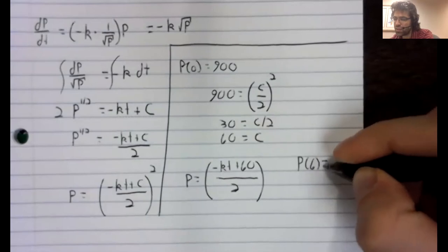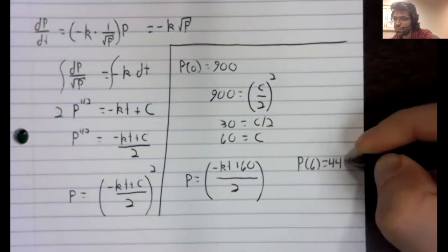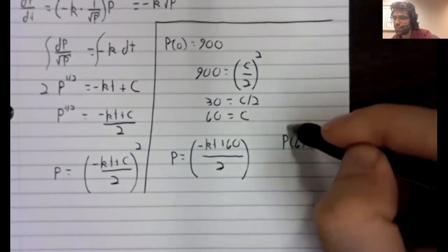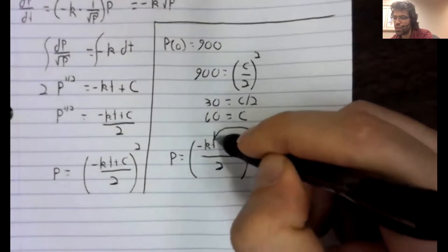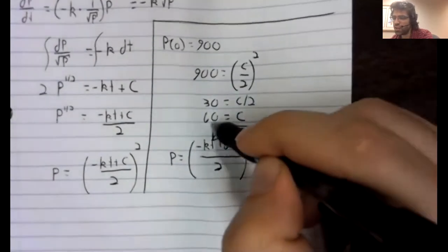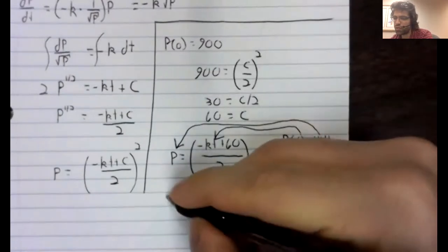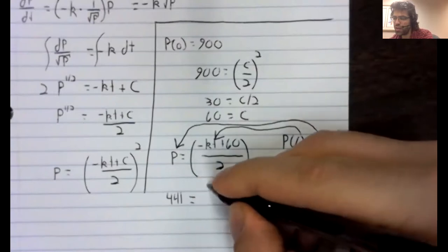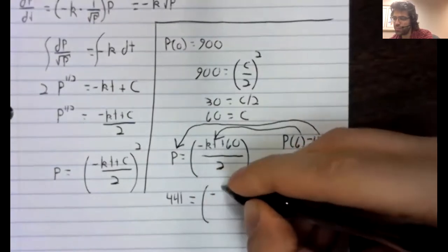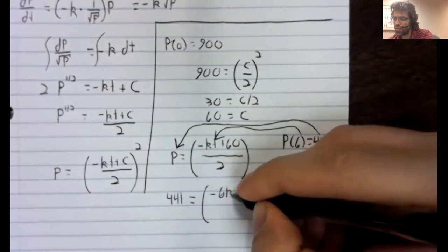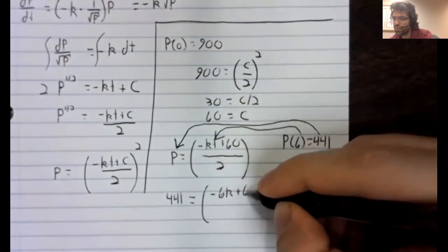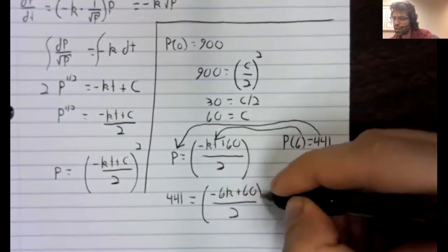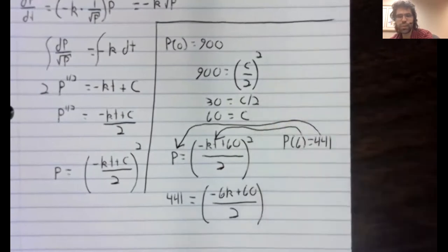P of six equals 441. So we'll plug six in for t and 441 in for P. Copying error. This is being squared.